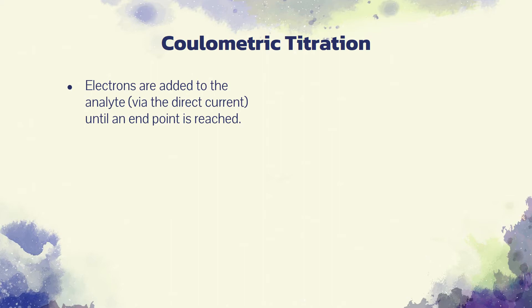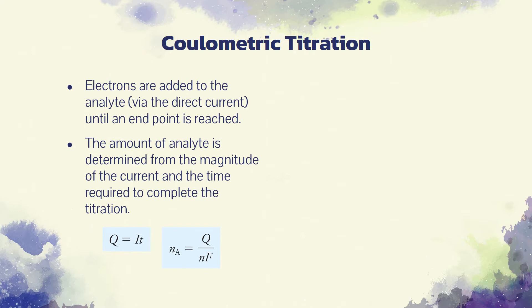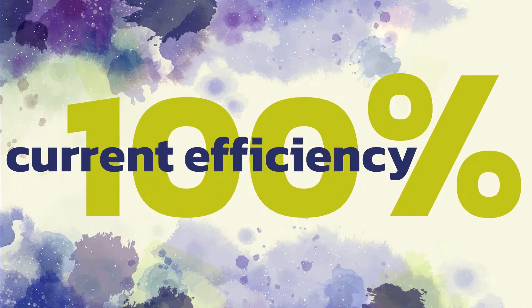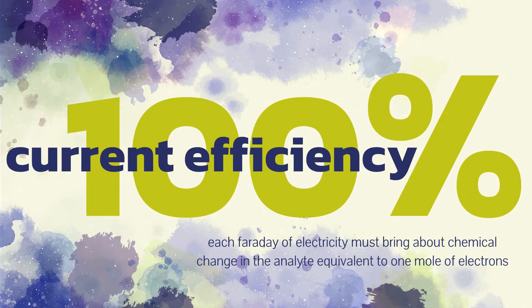At that point, the electrolysis is discontinued. The amount of analyte is determined from the magnitude of the current and the time required to complete the titration. The magnitude of the current in amperes is analogous to the molar concentration of a standard solution, and the time measurement is analogous to the volume measurement in conventional titrimetry. A fundamental requirement for all coulometric methods is 100% current efficiency — that is, each Faraday of electricity must bring about chemical change in the analyte equivalent to one mole of electrons.